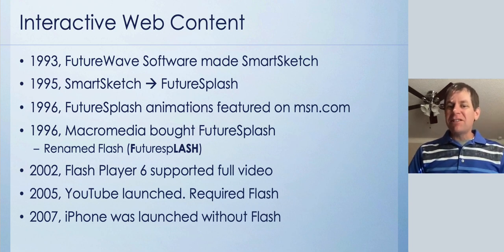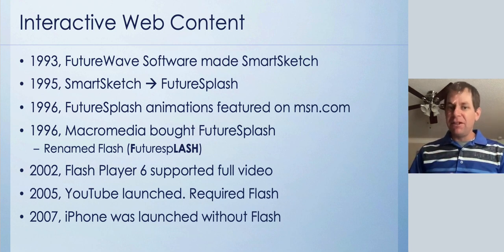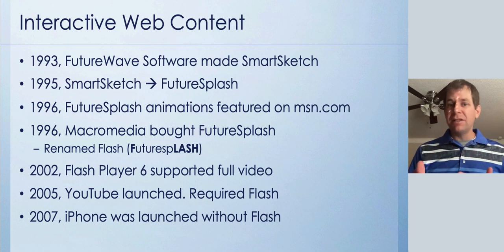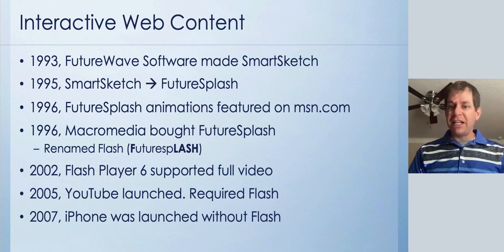In 1995, SmartSketch transitioned into a program called Future Splash, and Future Splash was used for animations on the early internet. In fact, way back in 1996, Microsoft was using Future Splash animations on msn.com, their main homepage.